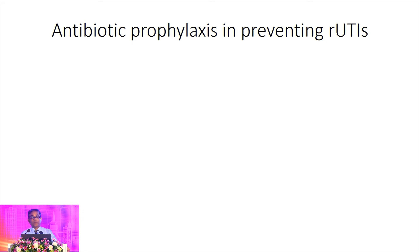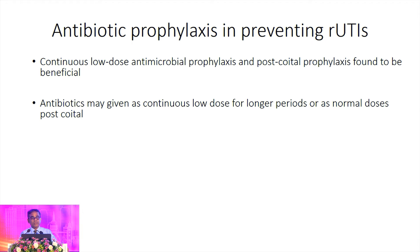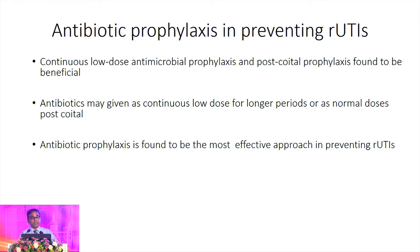The antimicrobial prophylaxis options available to prevent recurrent urinary tract infection include either continuous low-dose antimicrobial prophylaxis or normal-dose post-coital prophylaxis. You can give it for a longer duration at low dose, or normal doses post-coitally.